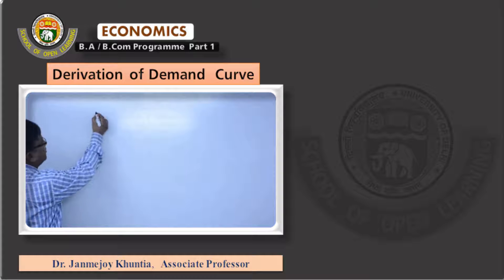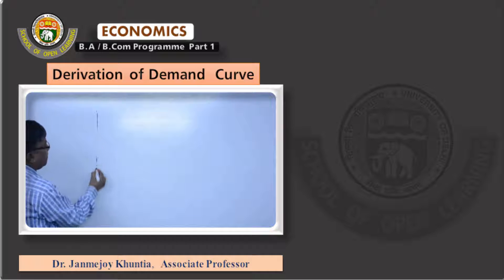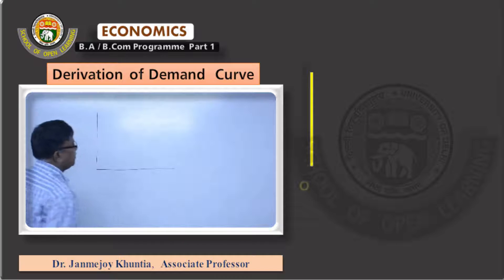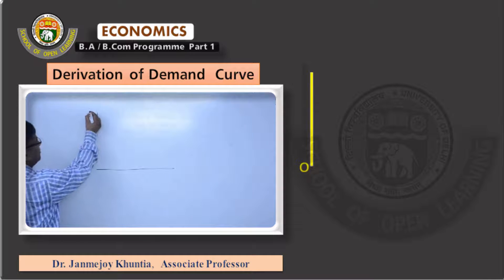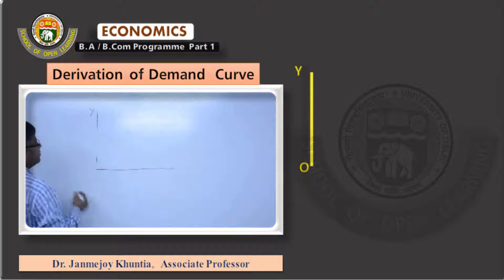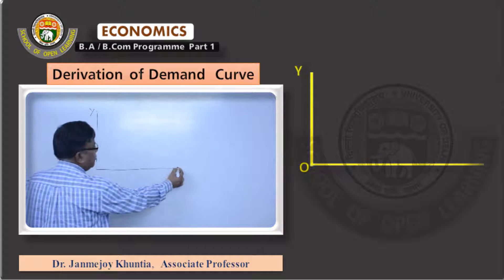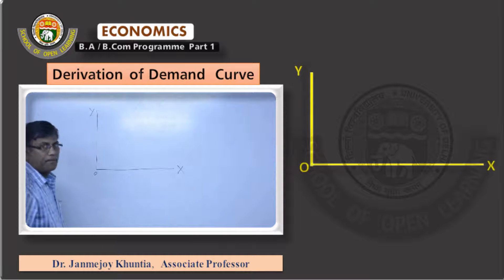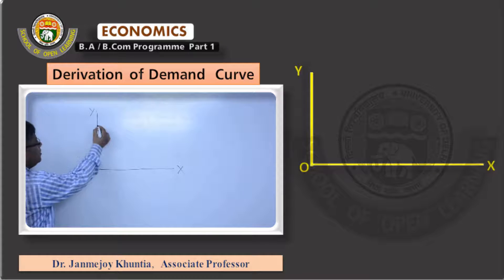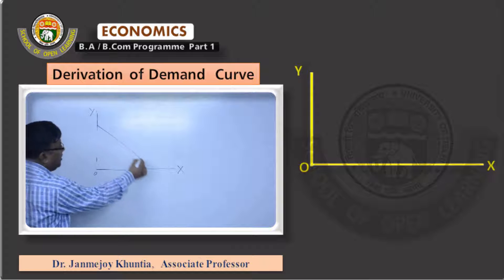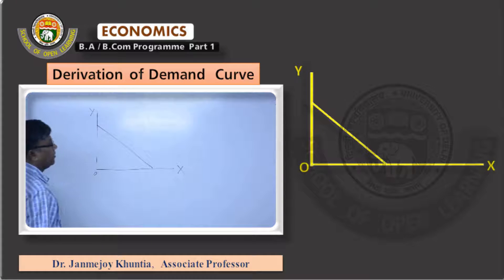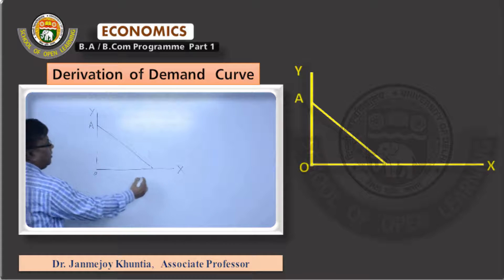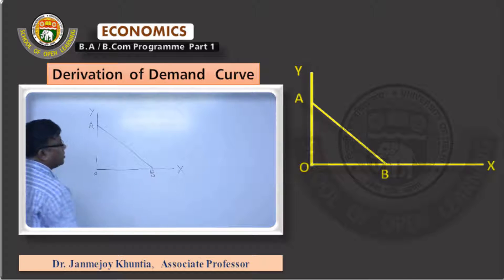Look at the diagram. We take good Y on the vertical axis and good X on the horizontal axis. These are the quantities. The budget line is given as AB — that is the budget line.